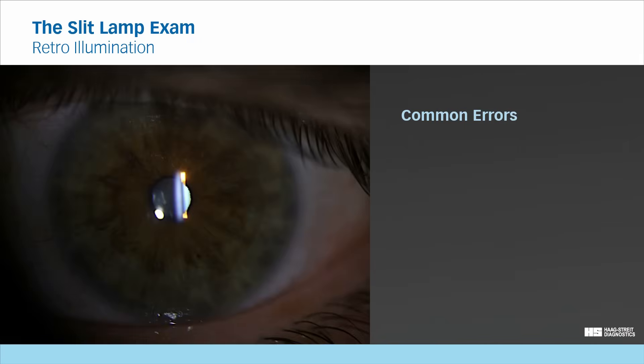When examining the lens or the iris, you may not be able to find the red reflex from the retina. This may be due to insufficient light intensity, an illumination angle that is too large, or a pupil that is too small.